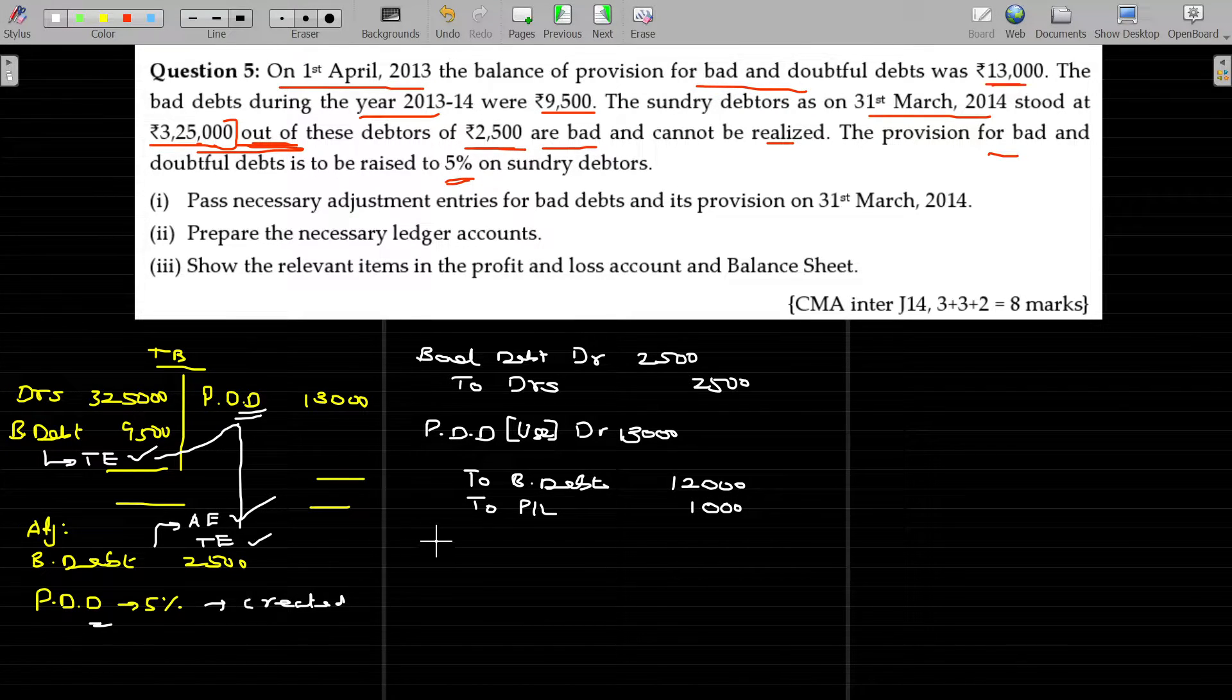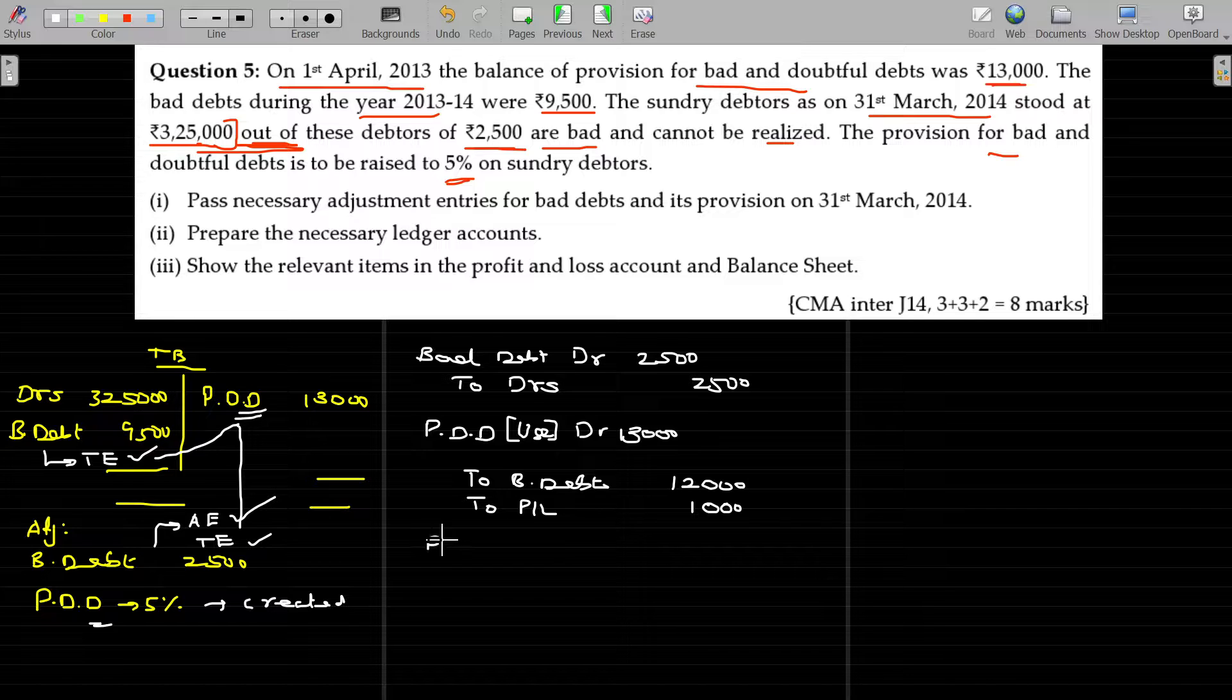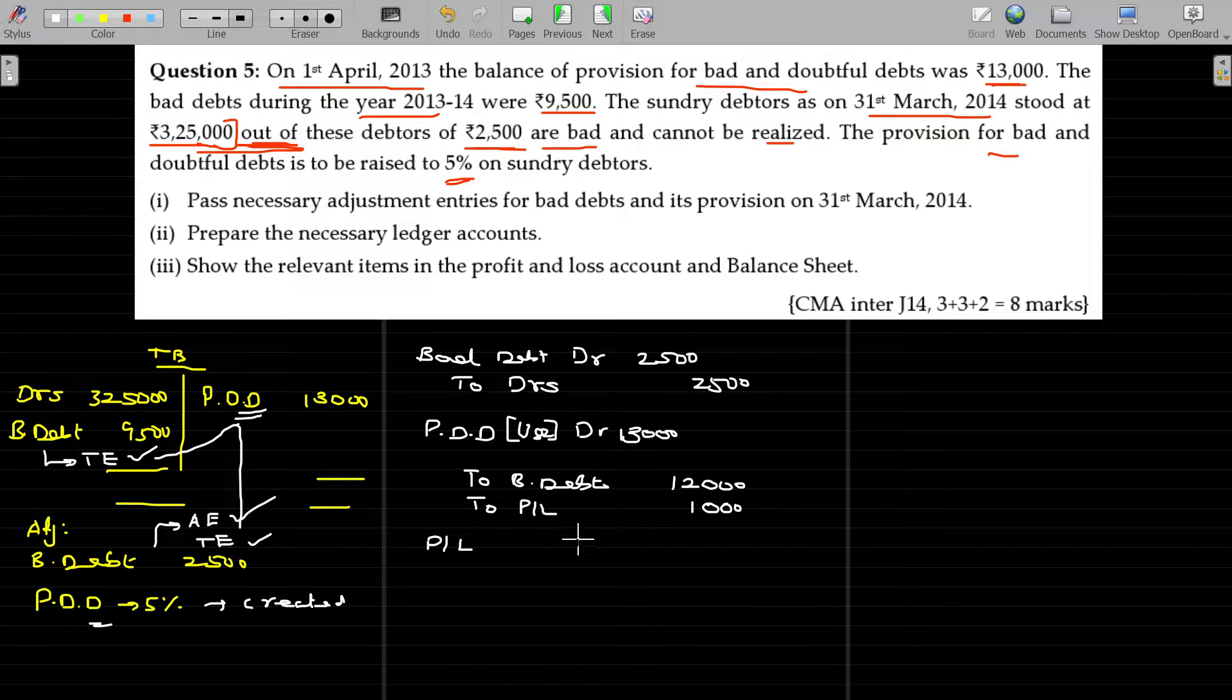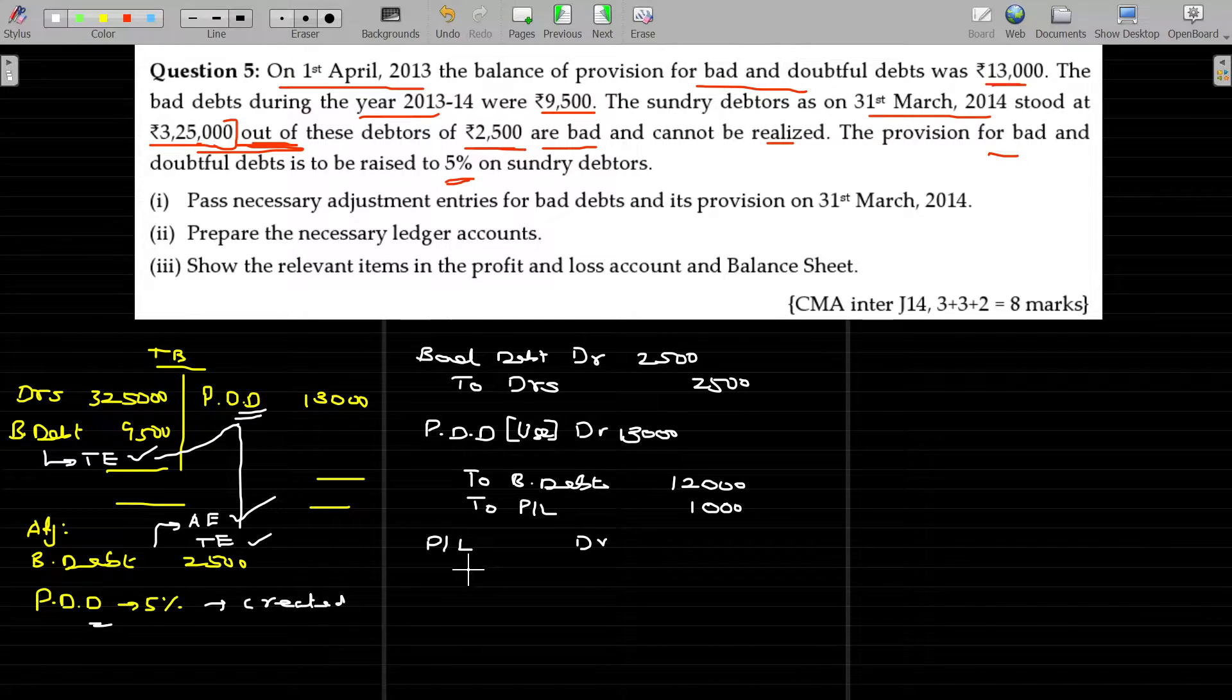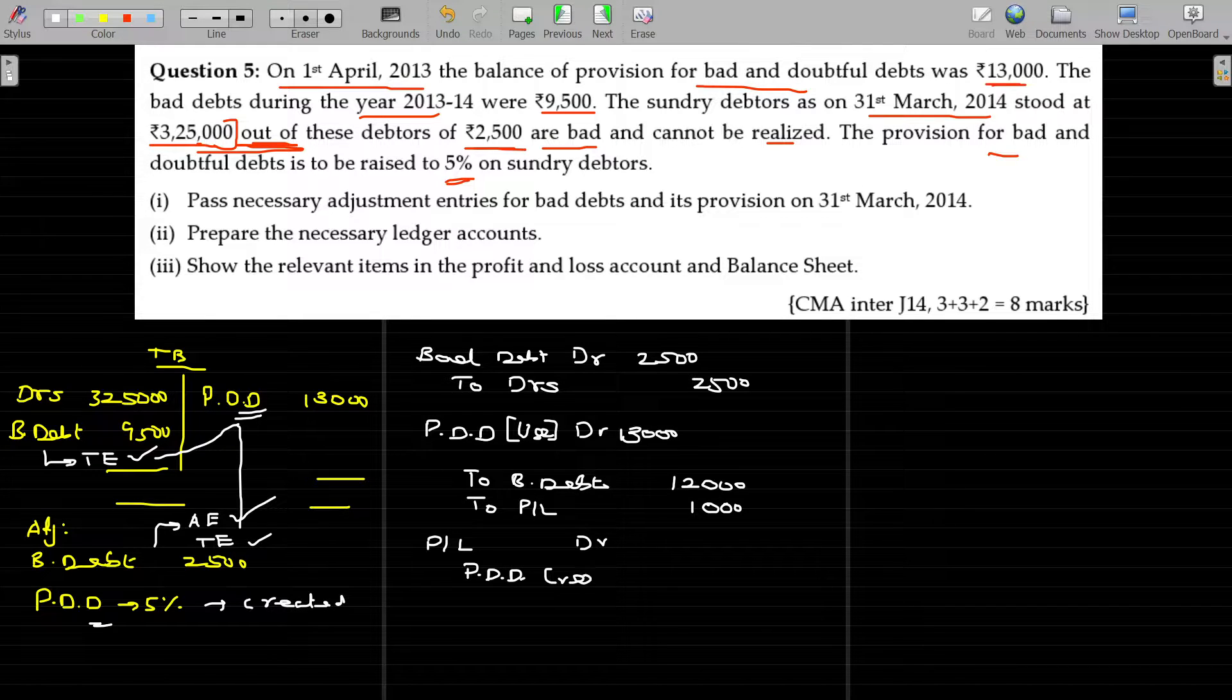How much of the PDD you have to maintain now? The PDD required to be maintained here is 5 percentage on the debtors available by the time. So P&L account debit to PDD. Created, created.